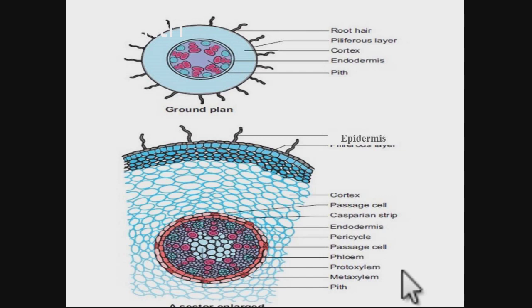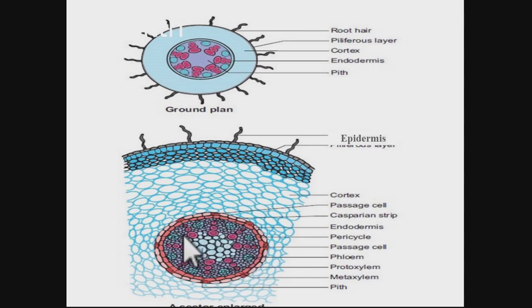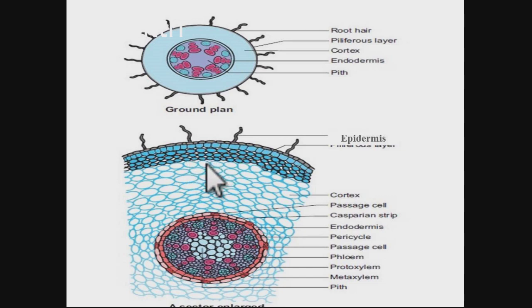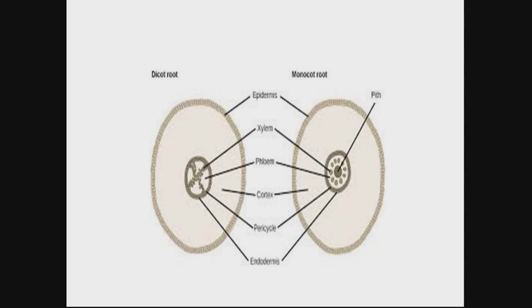The main difference between dicot root and monocot root is that monocot root has a well-defined, large pith at the center, whereas in dicot root the pith is usually absent. Also, the number of vascular bundles is generally lower (fewer than 6) in dicot root, while in monocot root the number of vascular bundles is generally numerous — more than 6. Monocot roots also have an exodermis layer.